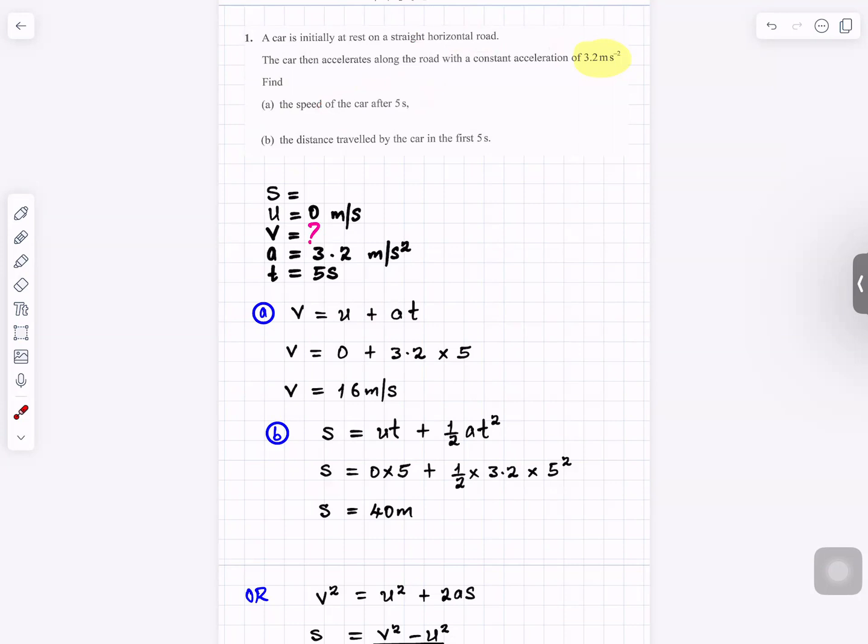We write the SUVAT. We use v equals u plus at. Initial speed is zero, acceleration is 3.2, and the time is five seconds. That gives us 16 meters per second as the answer.